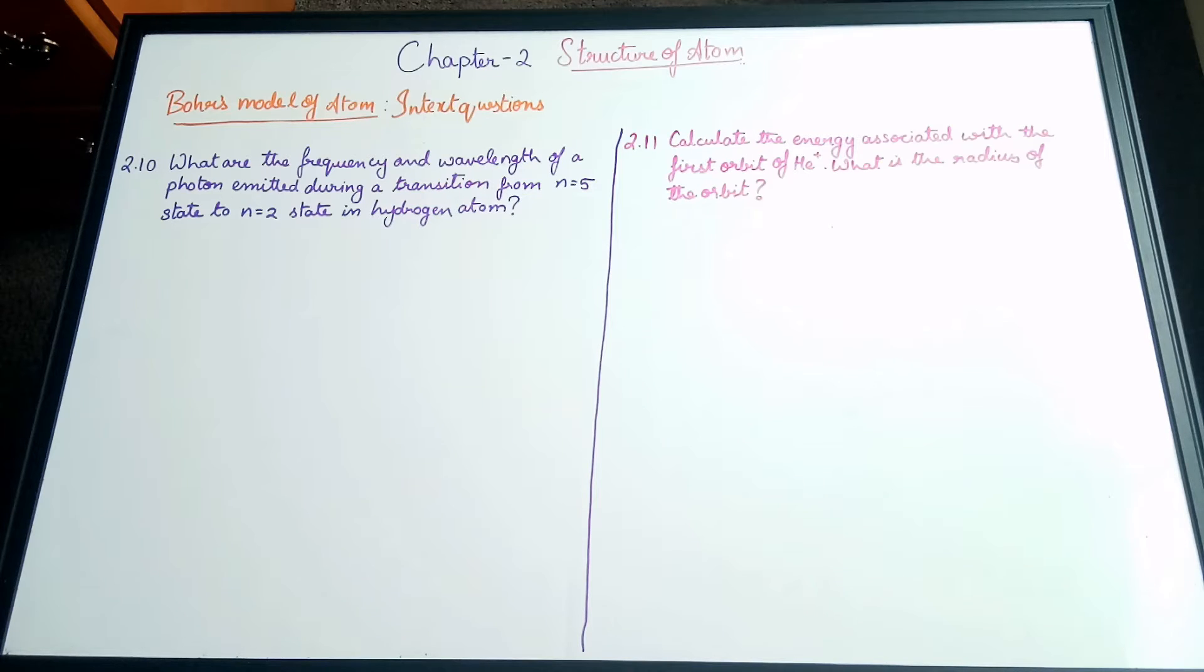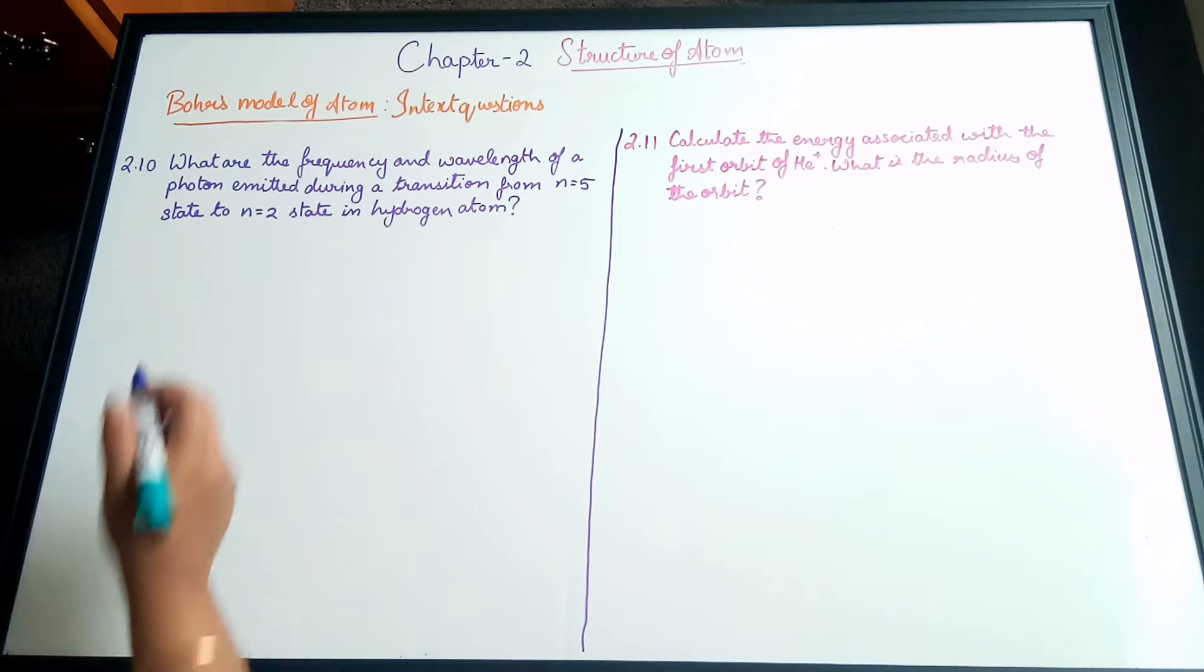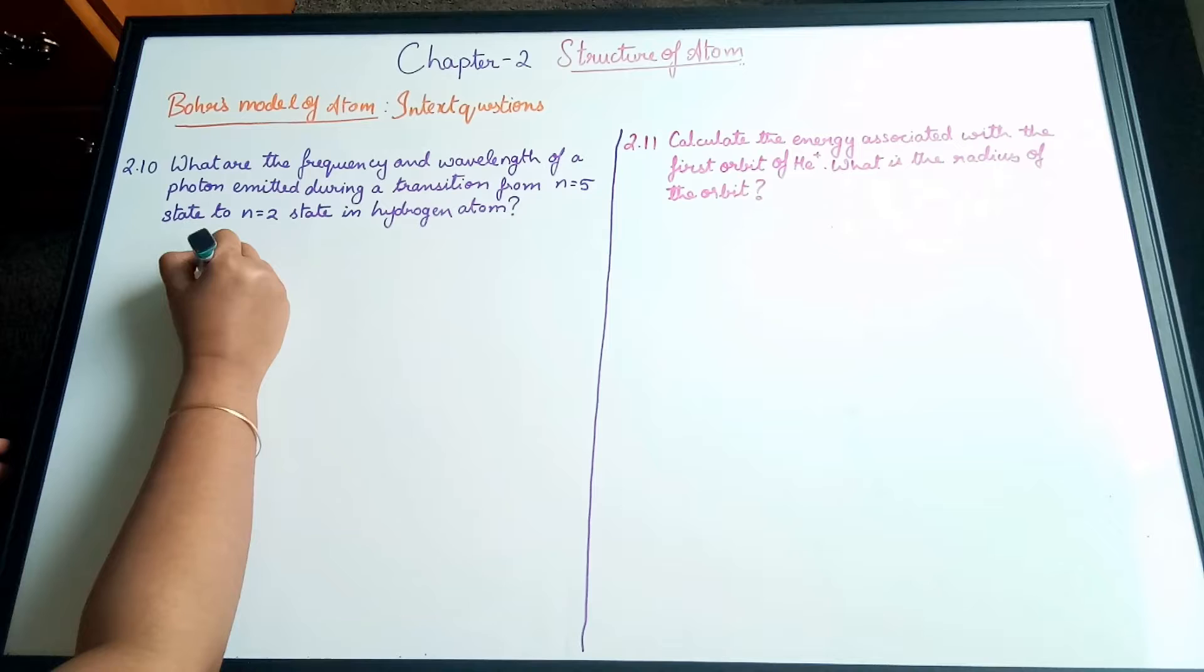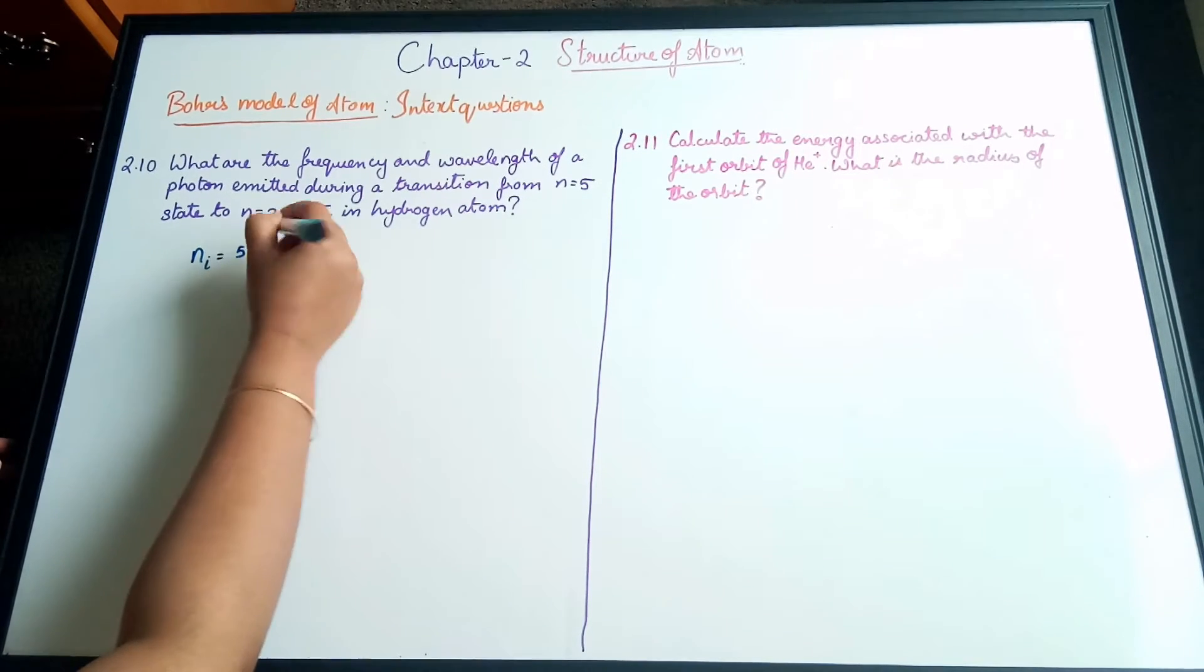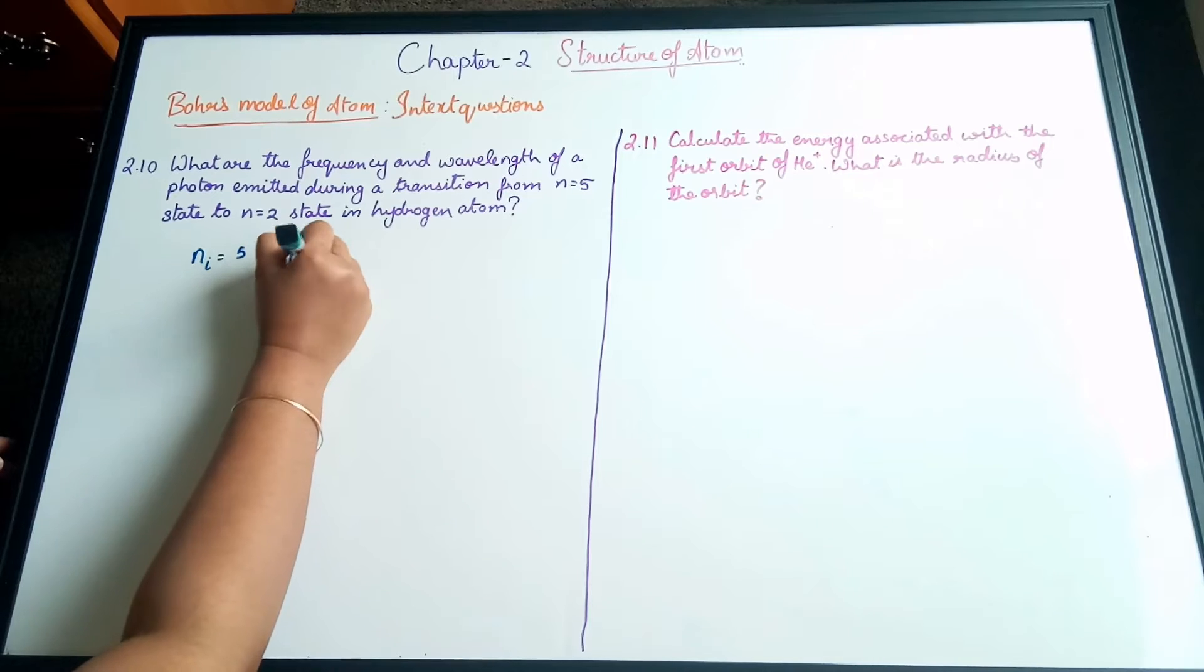So let's start. Question 2.10: What are the frequency and wavelength of a photon emitted during a transition from n=5 state to n=2 state in a hydrogen atom? From this we know that n initial equals 5 and n final equals 2.